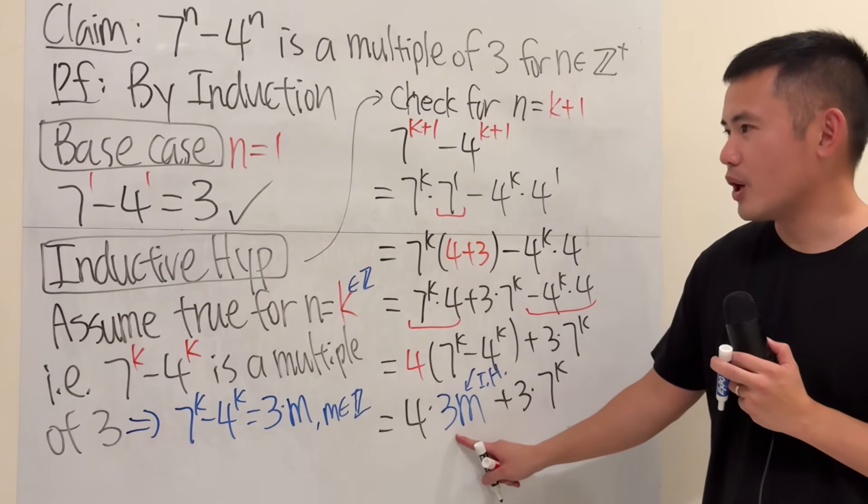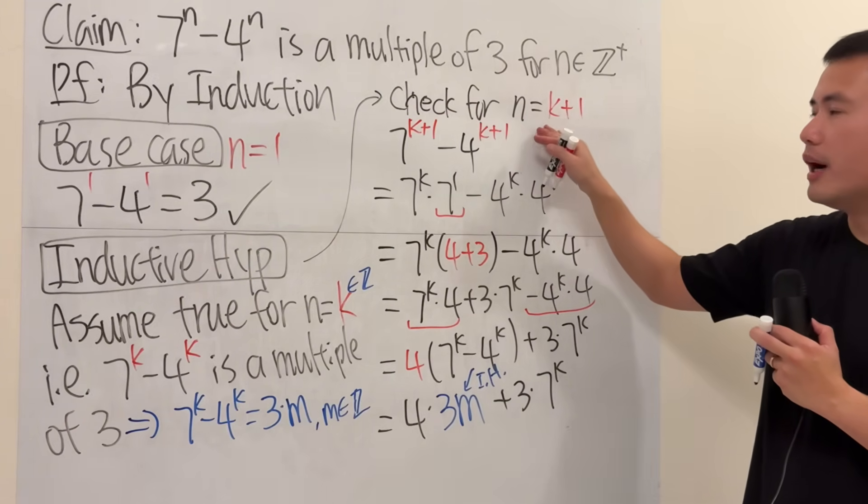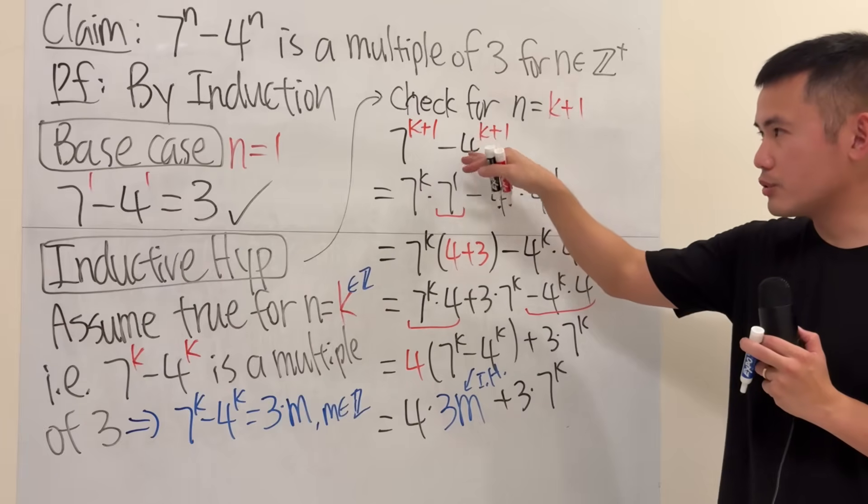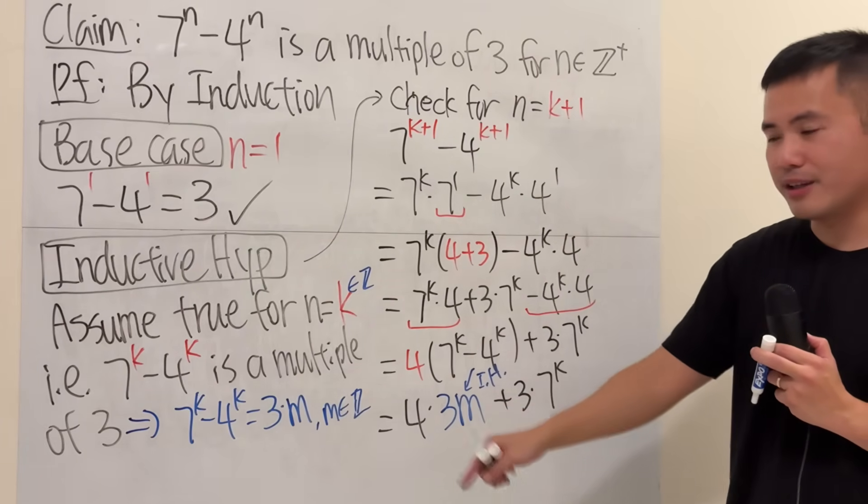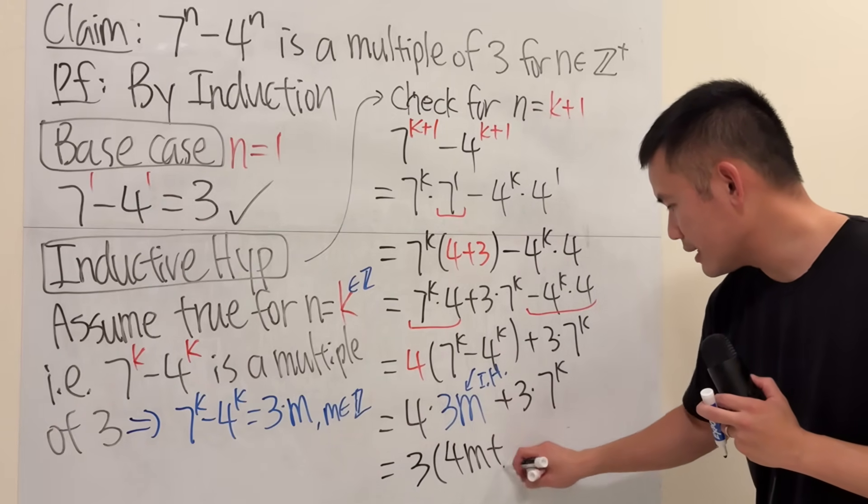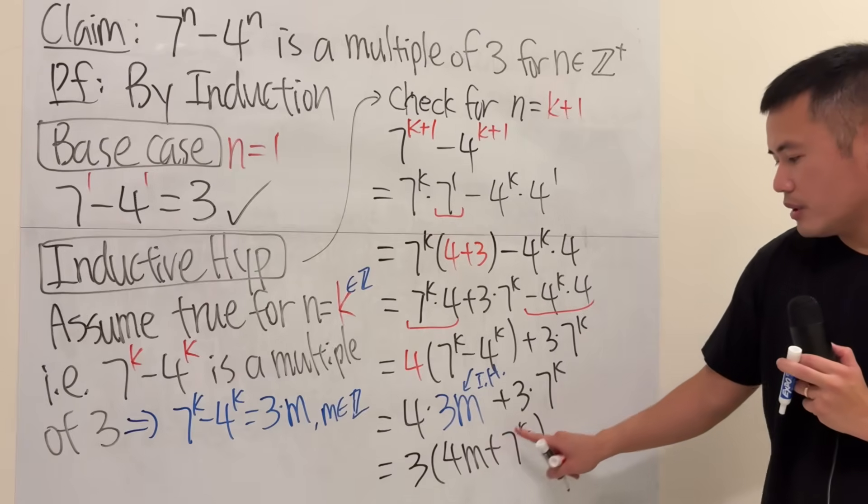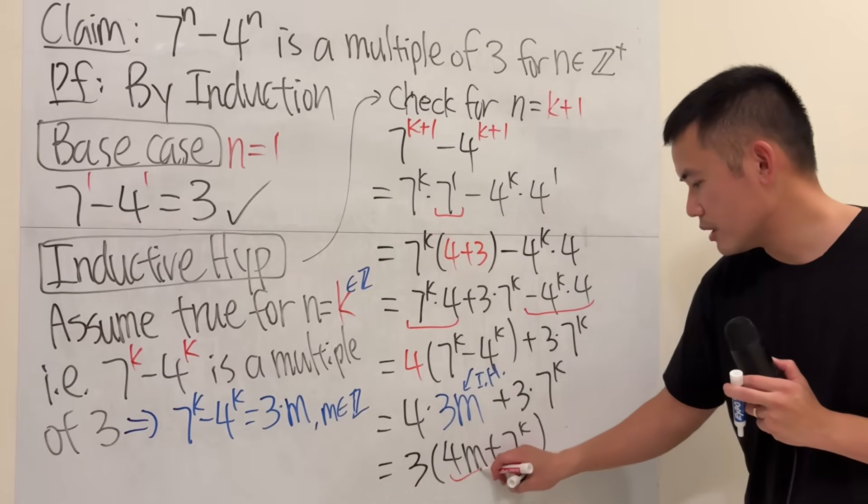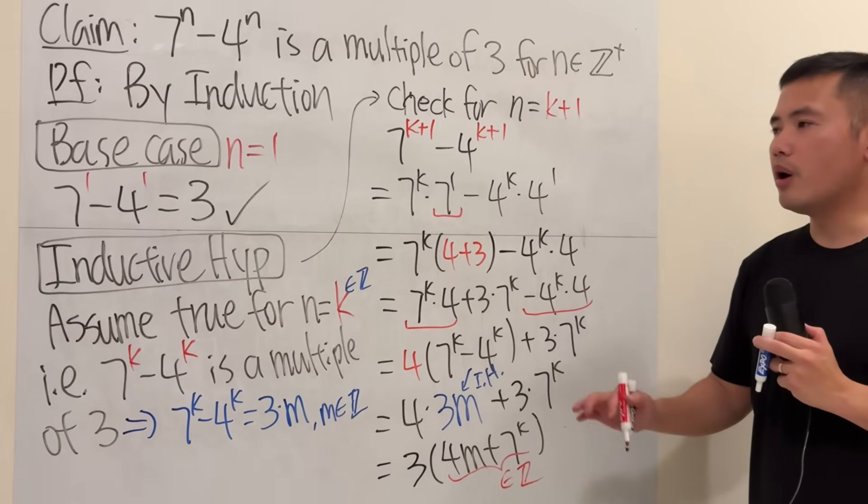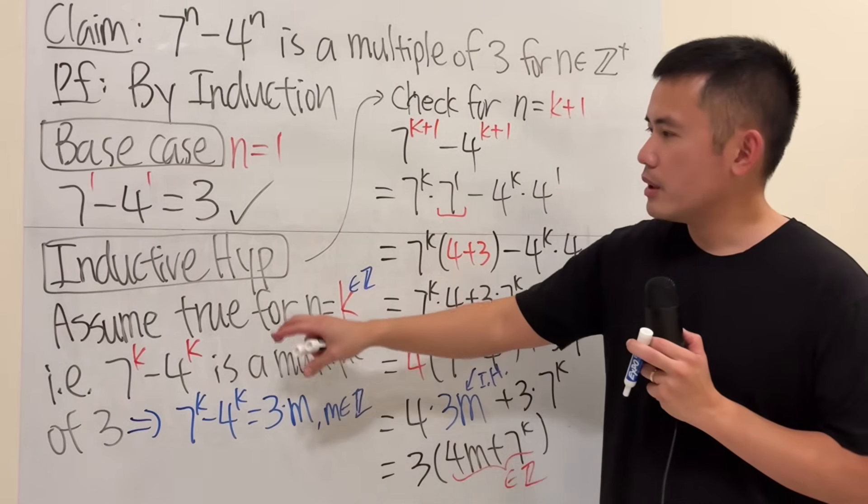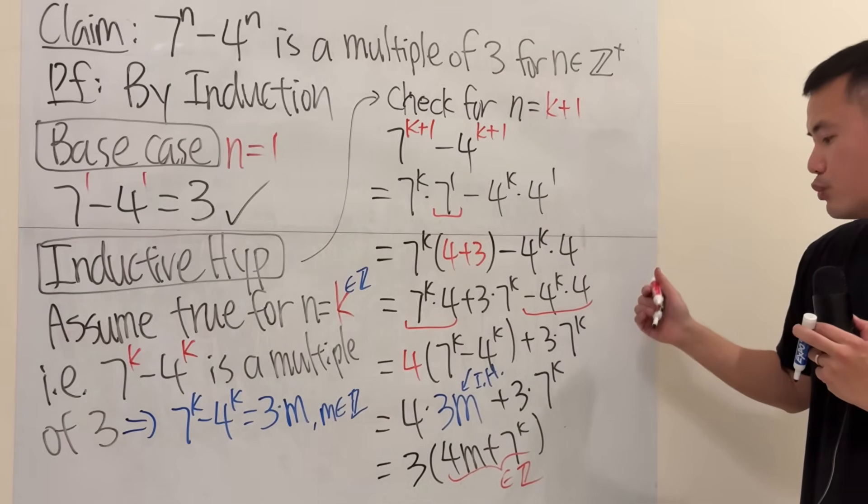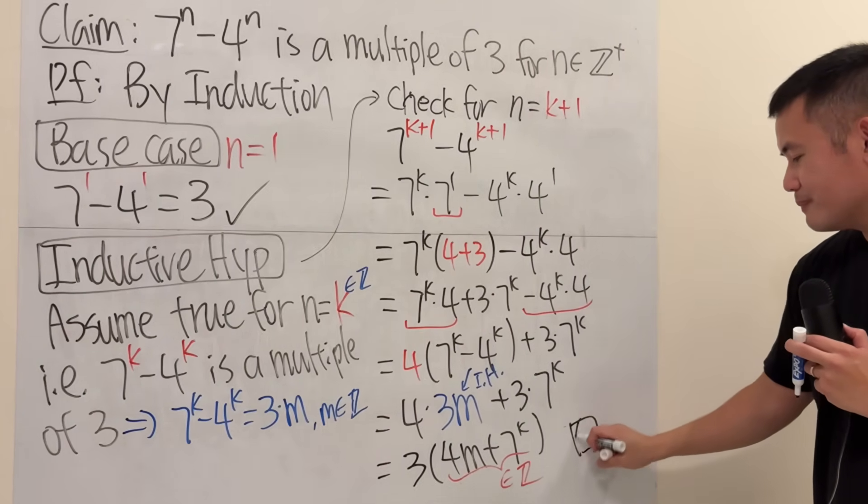Well, remember what we were trying to show is that the statement is also true for n equals k plus 1. We're trying to show that this right here is a multiple of 3. So I want to factor out the 3. So factor that out, and then we get 4m plus 7 to the k. m is an integer, k is an integer. This part right here has to be an integer. So this is good. It is a multiple of 3. Therefore, we have successfully shown that if this right here is true for n equals k, this is also true for n equals k plus 1. So we are done.